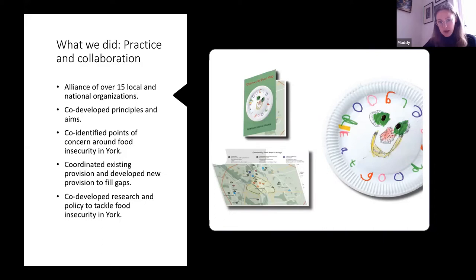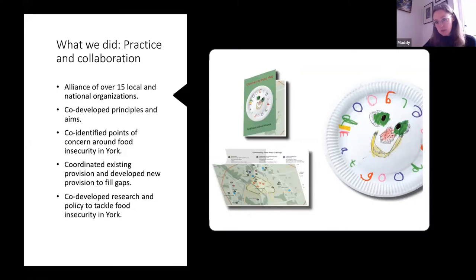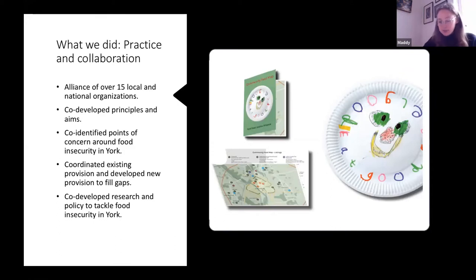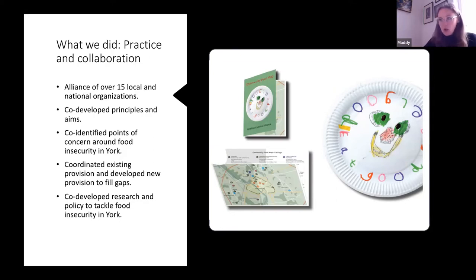A key role of the alliance was coordinating existing provision and developing new provision. When we set up, there was a sense that lots of people were doing work in York but there wasn't much coordination — if someone needed to find a food bank on a Tuesday, where would they go? So we mapped all existing provision in York and produced community food maps distributed all over the city — in libraries, the local authority, community cafes — so people had a clear, non-stigmatising map showing different types of food aid and when they were open.